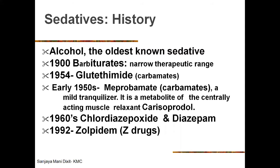After barbiturates came glutethimide and meprobamate (both carbamates), which were thought to be better alternatives, but proved to be no improvement. With the introduction of chlordiazepoxide and diazepam in the 1960s, benzodiazepines became widely used as sedatives and hypnotics. Then came the Z-drugs (zolpidem), introduced in 1992 — a newer non-benzodiazepine derivative that is widely used today. The most commonly prescribed drugs fall in the benzodiazepine and Z-drug groups.